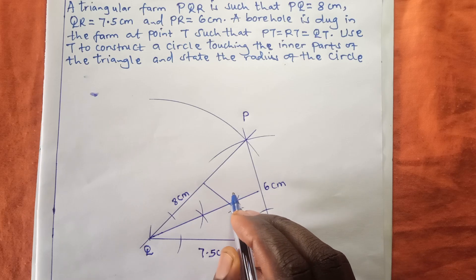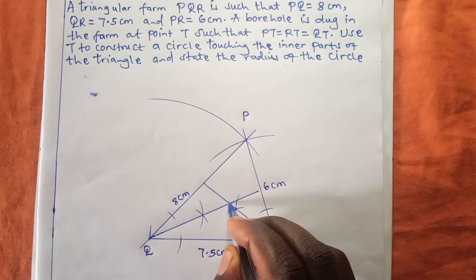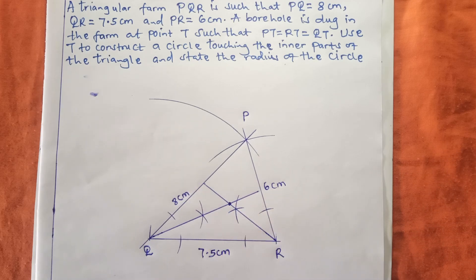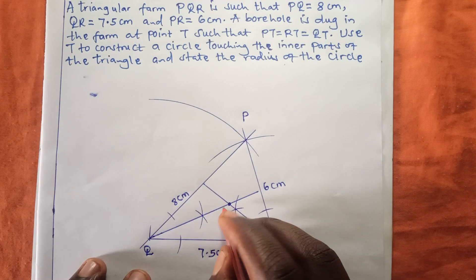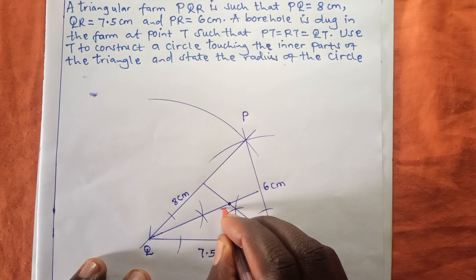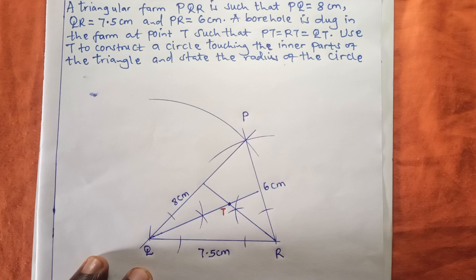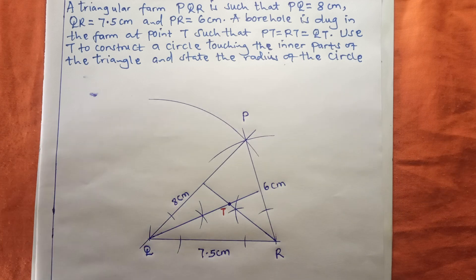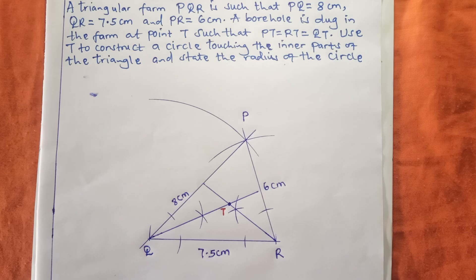The two lines have now met at a point, and from the question we were told that point is point T. So we label it as T. This is our point T — this is the point of interest.